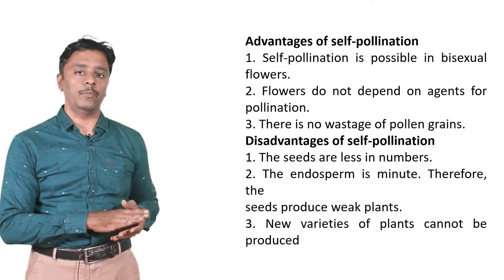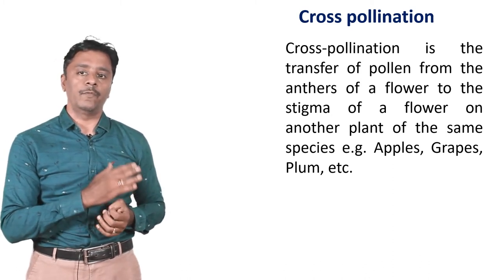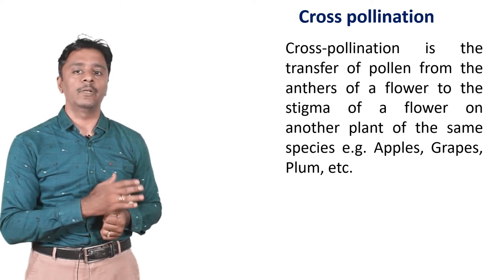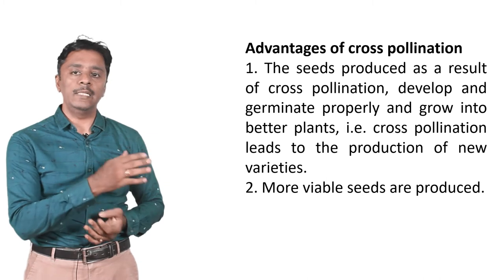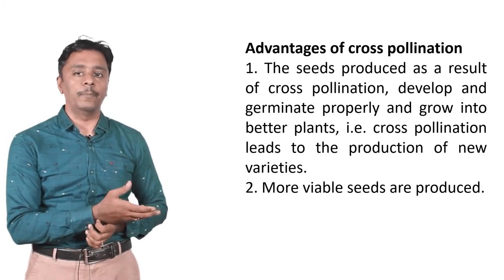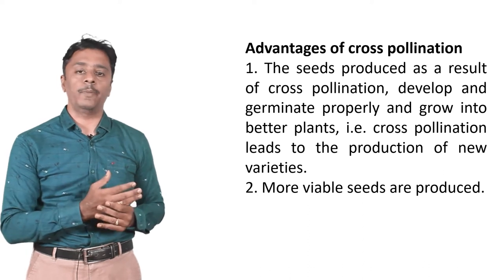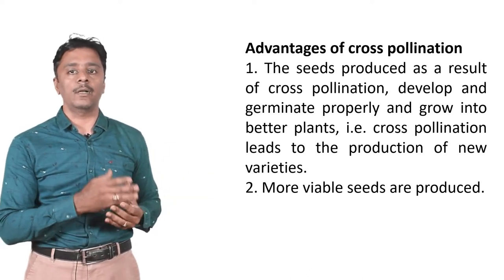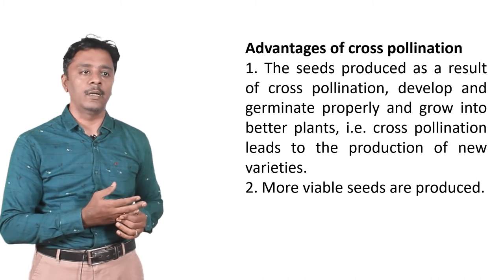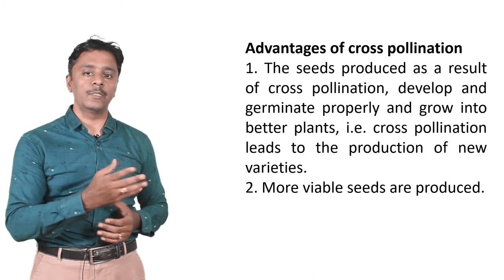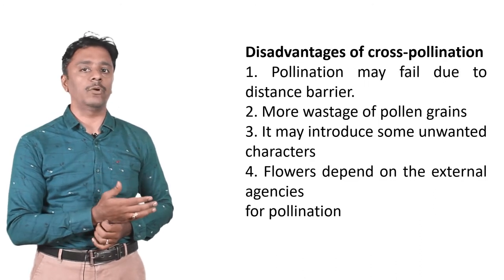The next one is cross-pollination, which is a two-mark question. Cross-pollination is the transfer of pollen from the anthers of a flower to the stigma of flowers on another plant of the same species. Examples: apples, grape, plum, etc. Advantages of cross-pollination: seeds produced develop and germinate properly and grow into better plants; leads to production of new varieties like disease-resistant plants or plants with higher yield; more viable seeds are produced.